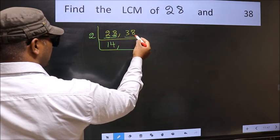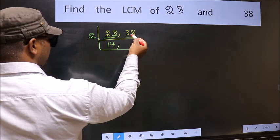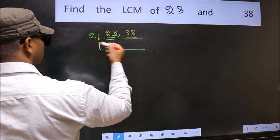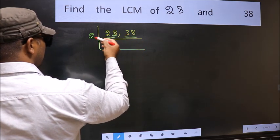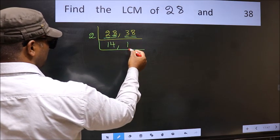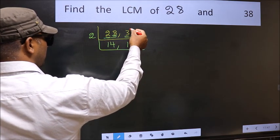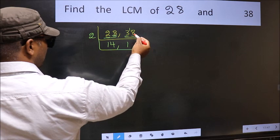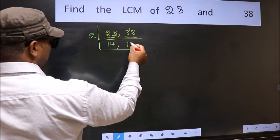Now the other number 38, last digit 8, even, so this is divisible by 2. First number 3, a number close to 3 in 2 table is 2 ones, 2. 3 minus 2 is 1, 1 carried forward, 18. When do we get 18 in 2 table? 2 nines, 18.